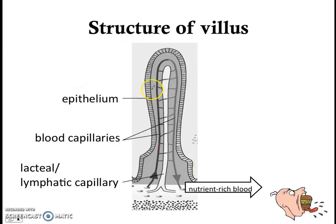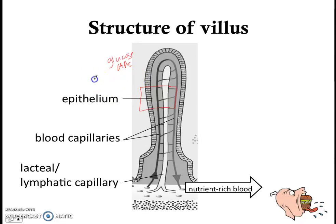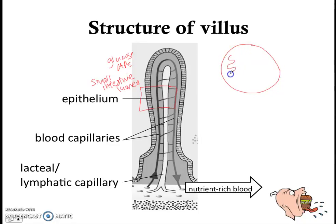Now we're going to zoom in and take a closer look. You will see a row of epithelial cells — the epithelium — on the inside where there are blood vessels and lacteals, and on the outside where the products of digestion like glucose and amino acids will be. The outside part is also called the small intestine lumen — basically the tube, the space of the small intestine.